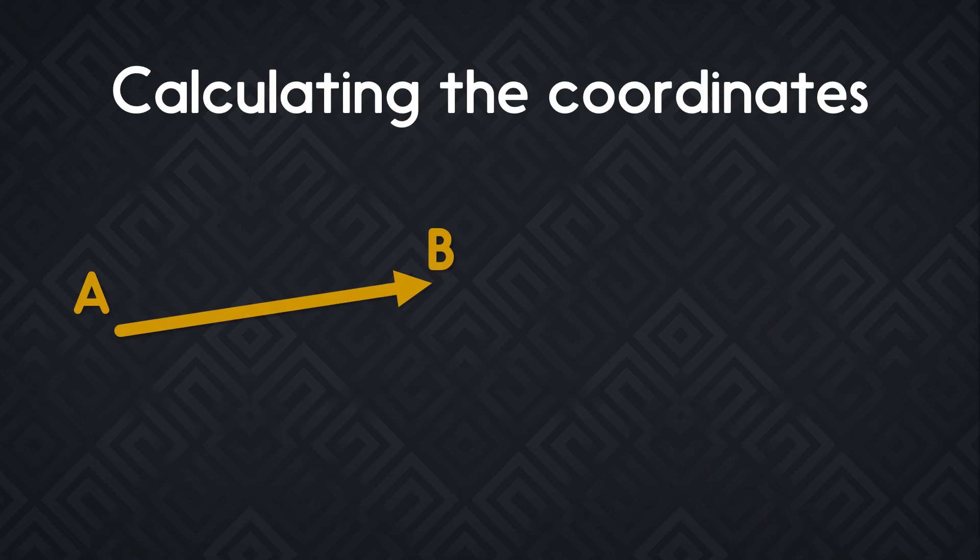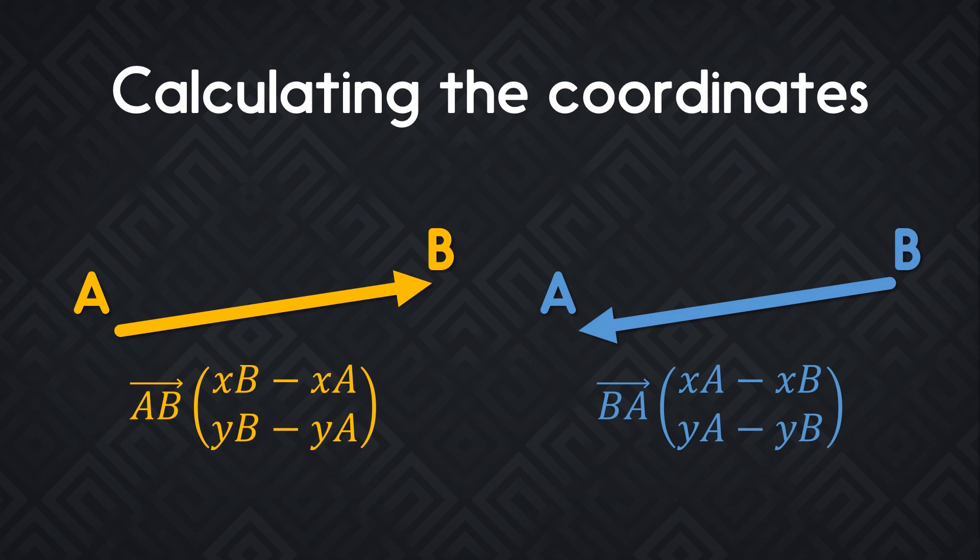You can calculate those coordinates. If the vector is going from point A to point B, you will subtract the coordinates of A to the coordinates of B. To get the AB vector, we subtract the x of A to the x of B and then the y of A to the y of B. If the vector is going from B to A, that's the other way around. You subtract the coordinates of point B to the coordinates of point A.